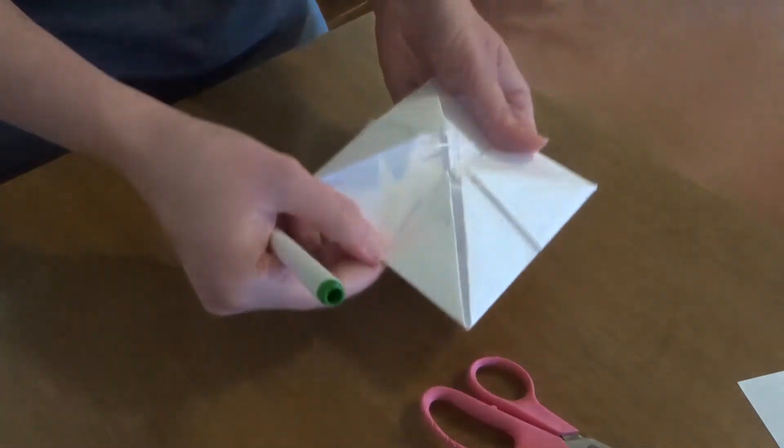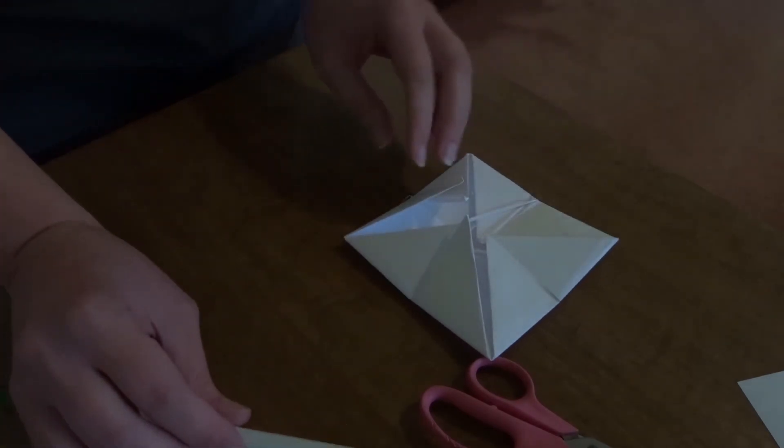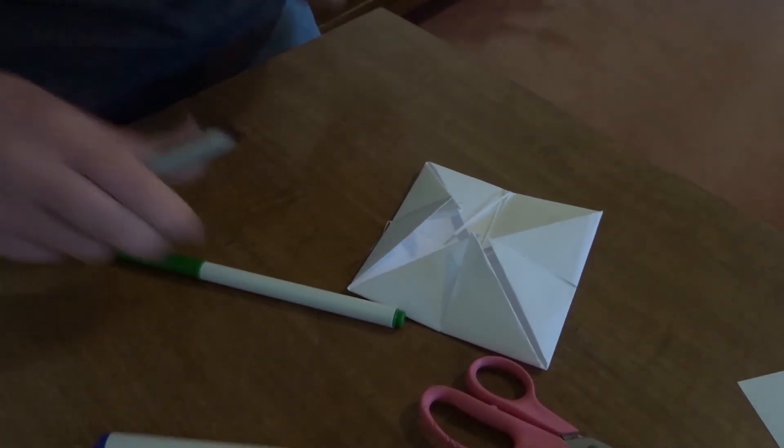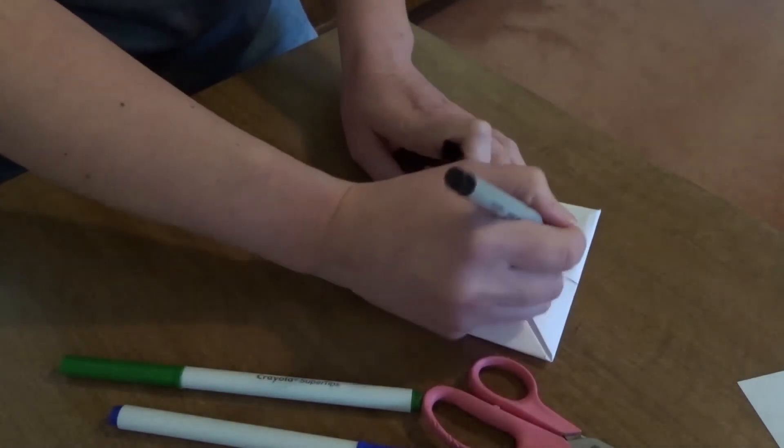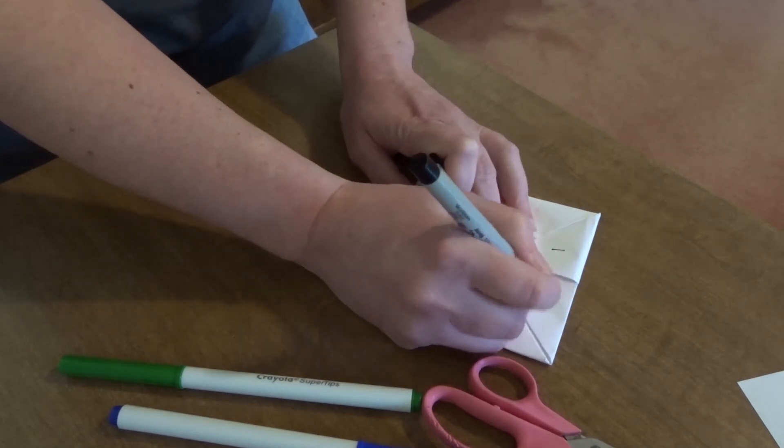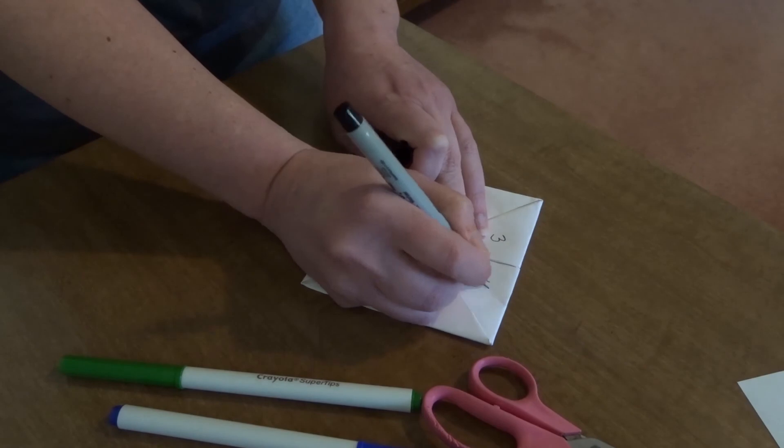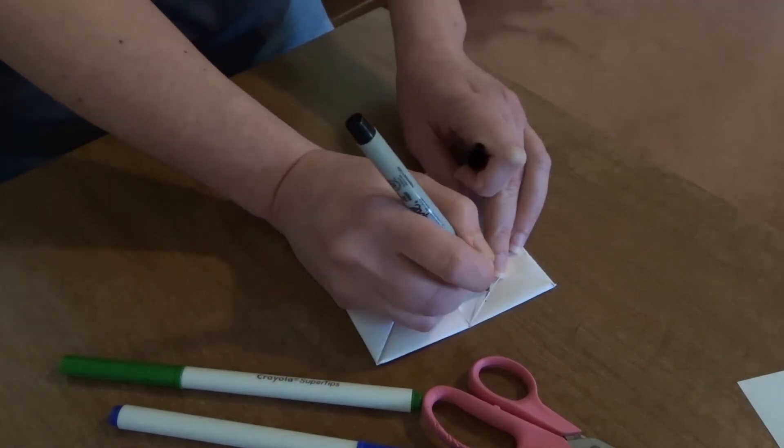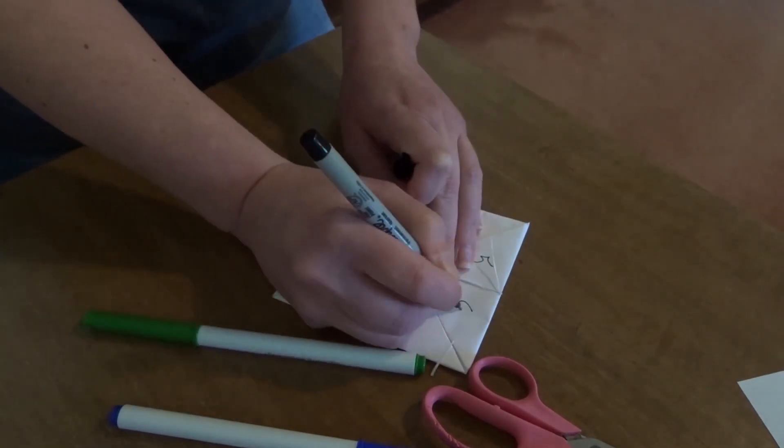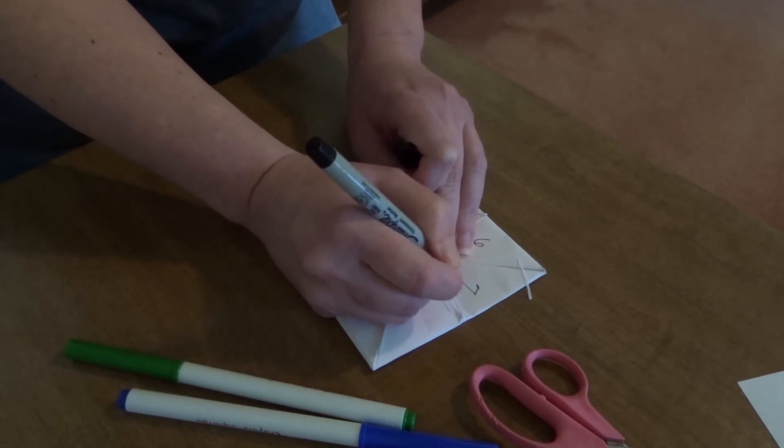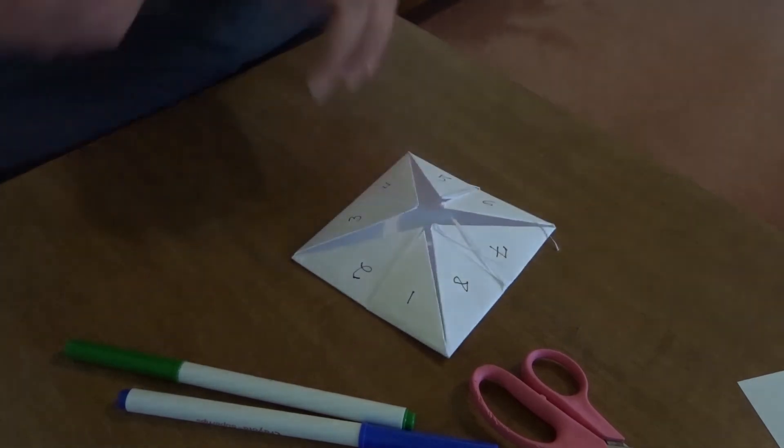Then, once you've colored each one of these a different color, you open this up and you write your numbers. Start: one, two, three, four, five, six, seven, eight.